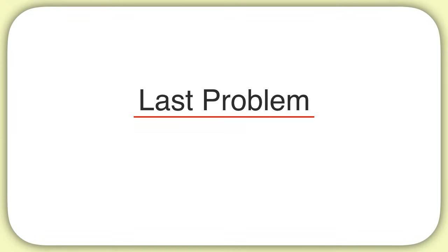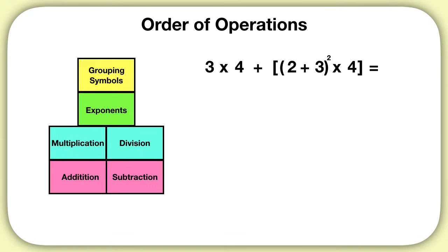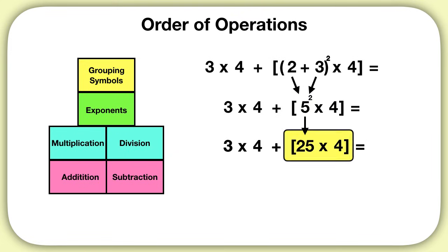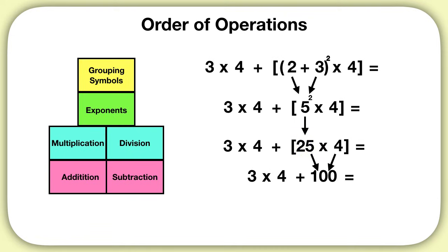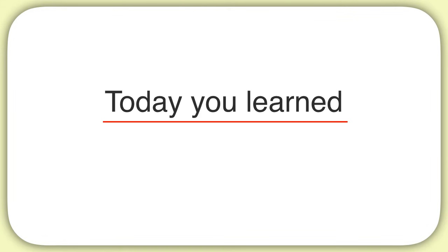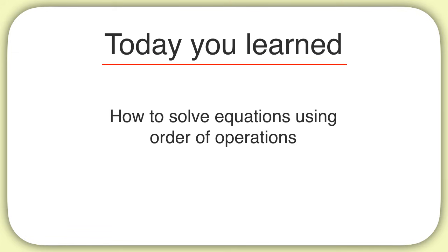Now here is your last problem for this video. What is the solution to this equation? First you solve your grouping symbols. Parentheses go first. 2 plus 3 is 5. Now we have an exponent inside of our grouping symbols. 5 to the power of 2 is 25. Then we can solve 25 times 4 to get 100. After that, we have multiplication. 3 times 4 is 12. And finally, we can add. 12 plus 100 is 112. That's our final answer. Today you learned how to solve equations by using the order of operations.